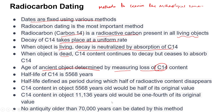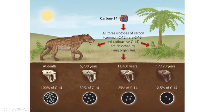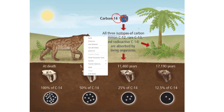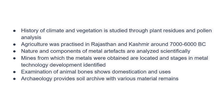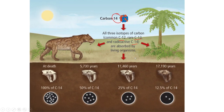A limitation of radiocarbon dating is that no antiquity older than 70,000 years can be dated by this method. The diagram shows three isotopes of carbon: C12, C13, and C14, all absorbed by living organisms. At death, 100% of C14 is present; after some years it reduces to 50%, then 25%, then 12.5%, allowing us to determine the age through carbon dating.